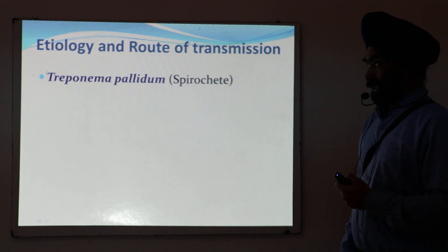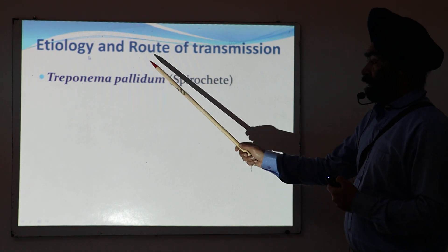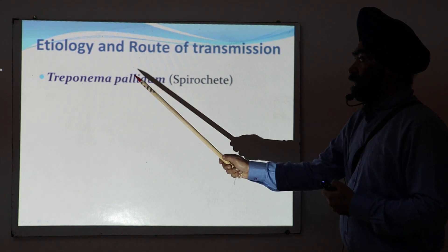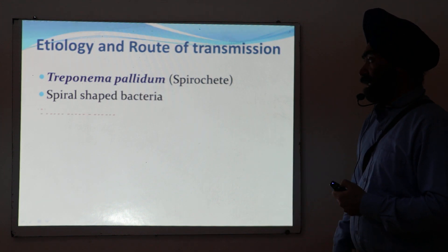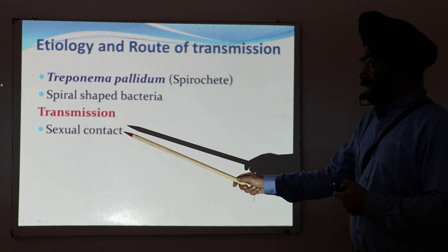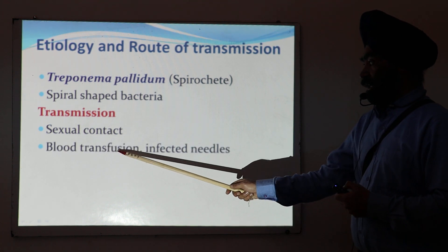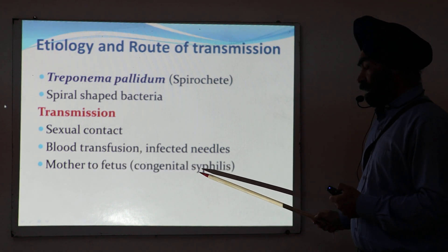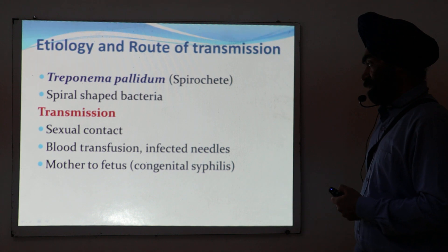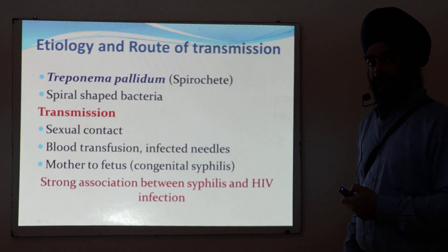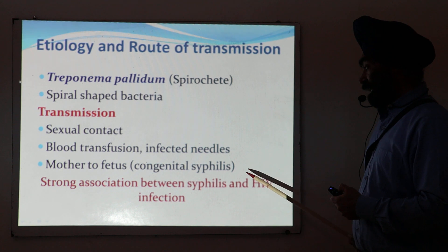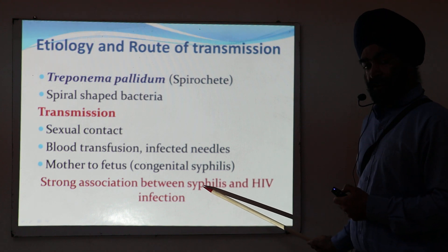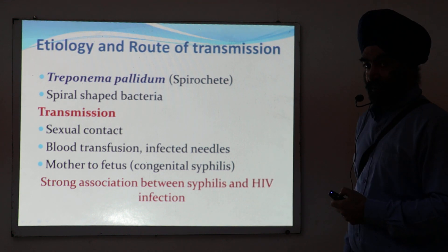Syphilis is caused by a spirochete which is Treponema pallidum, a spiral-shaped bacteria. Transmission occurs via major sexual contact, blood transfusion, infected needles, and from mother to fetus — when the latter happens, it is called congenital syphilis. There is also a strong association between syphilis and HIV; if HIV is present, there are significant chances syphilis is also present, and vice versa.